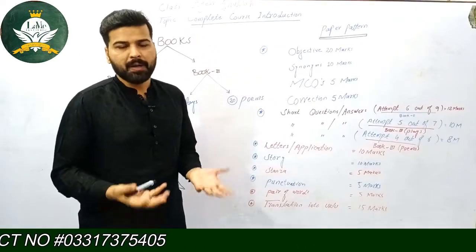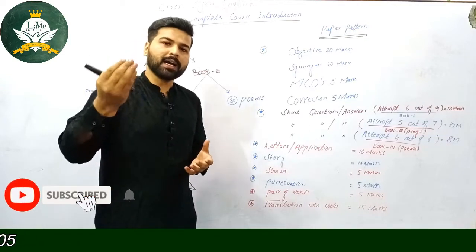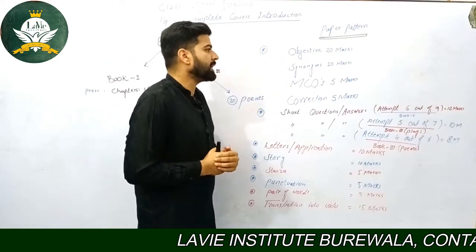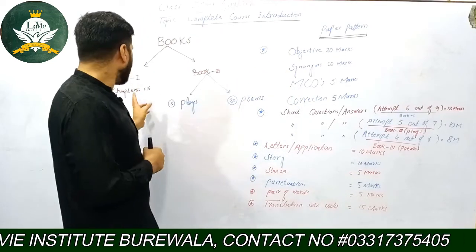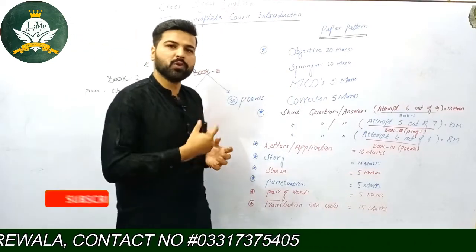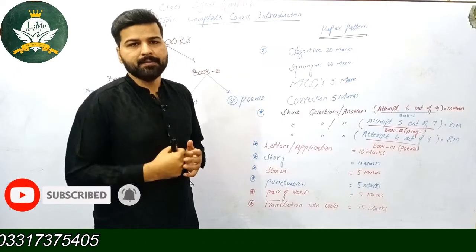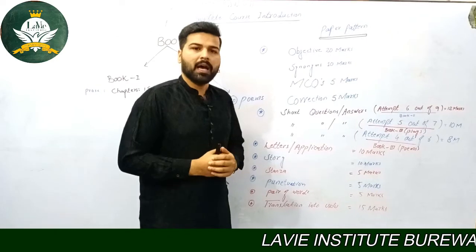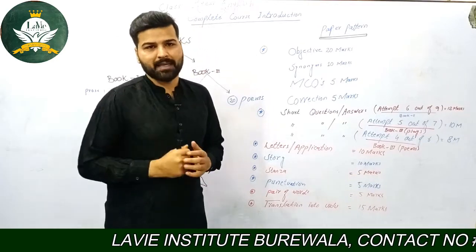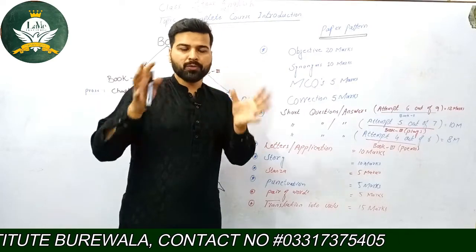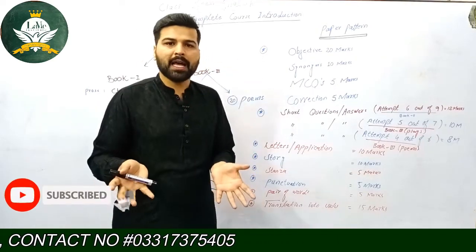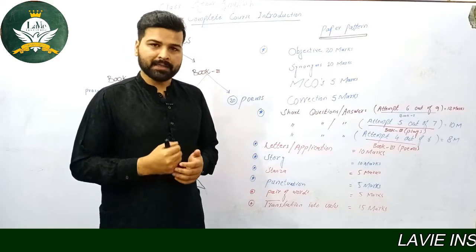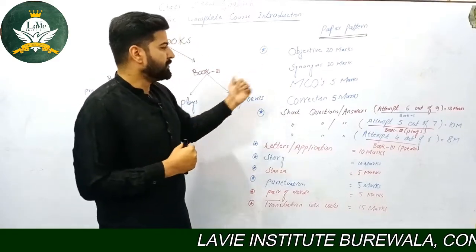آئیے دیکھتے ہیں کہ objective part کے اندر سے، کن کن books سے کیا کیا چیزیں آئیں گی جو ہم نے تیار کرنی ہیں۔ تو objective part کے اندر آپ کو سب سے پہلے اپنی دو books — book one and book three — سے synonyms یاد کرنے پڑیں گے۔ Synonyms آپ کے 10 marks کے آئیں گے objective part کے اندر۔ اور اس کے بعد آپ کے MCQs آئیں گے، 5 marks کے book one سے۔